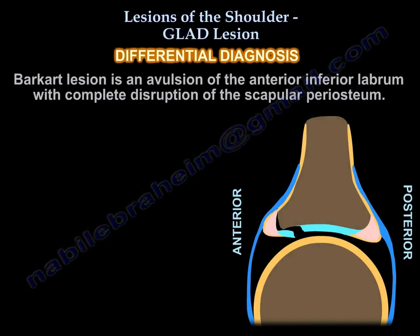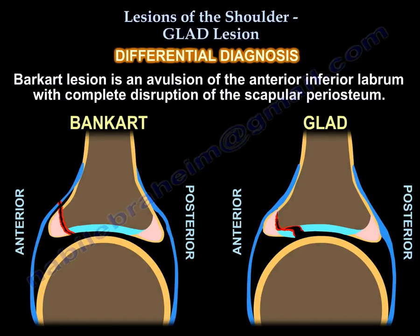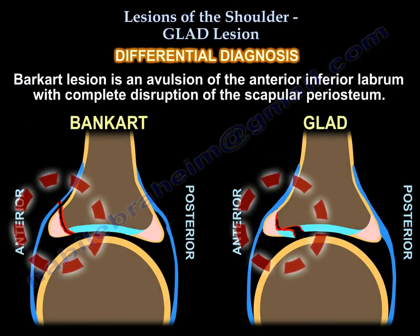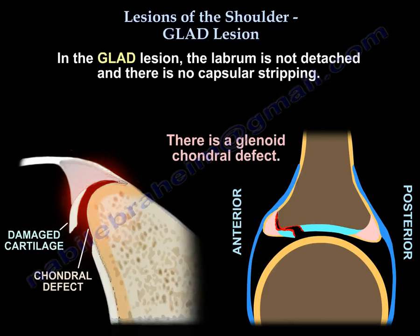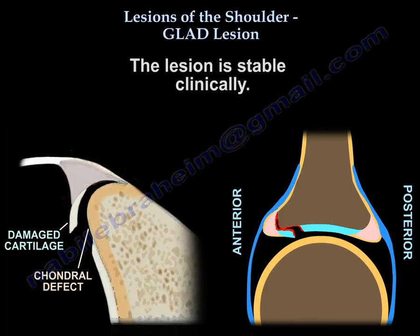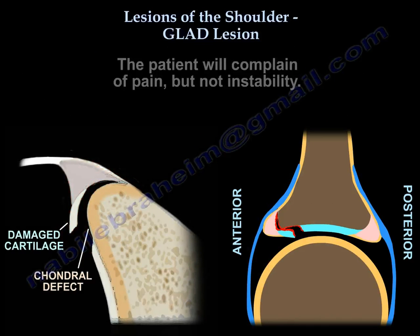The differential diagnosis is the Bankart lesion, which is avulsion of the anterior inferior labrum with complete disruption of the scapular periosteum. In the GLAD lesion, the labrum is not detached and there is no capsular stripping, but there is a glenoid chondral defect. The lesion is stable; clinically, the patient will complain of pain but not instability.